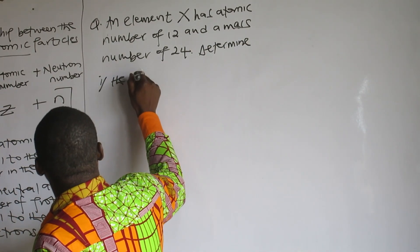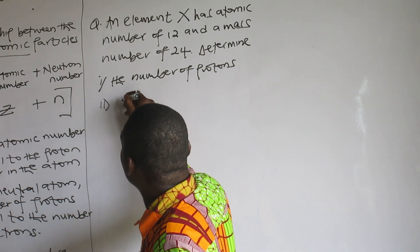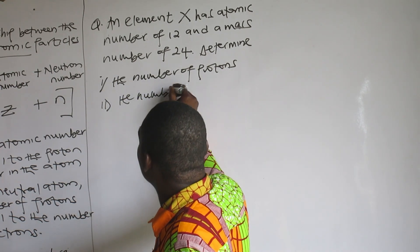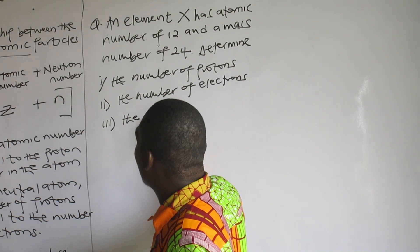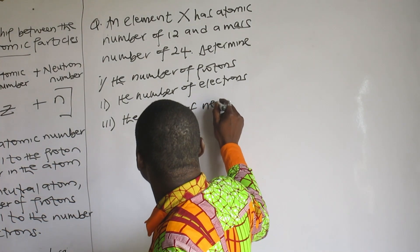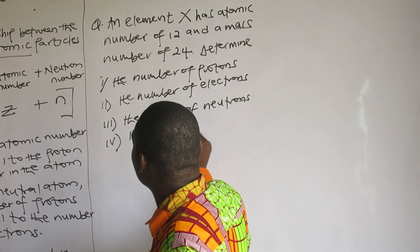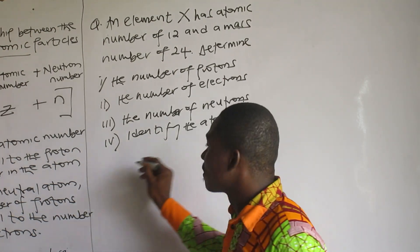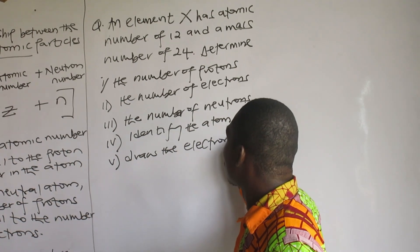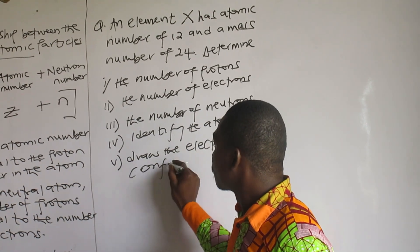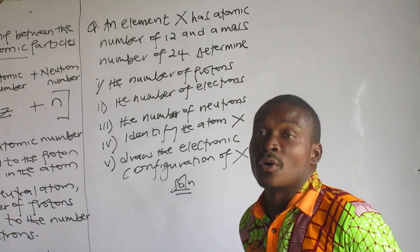Determine: i) the number of protons, ii) the number of electrons, iii) the number of neutrons, iv) identify the atom X, v) draw the electronic configuration of atom X. So that is the question. Let's go.